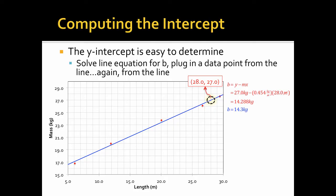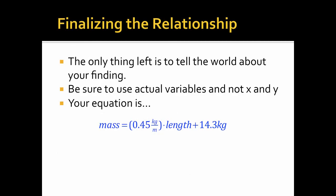So how do I wrap this up? I find the equation of the line. The equation is not going to have y's and x's in it because my data are mass and length. So what this all says is that my mass is equal to the slope times the length of the board plus 14.3 kilograms, not y is equal to 0.45 times length plus 14.3. We use our actual values from our y and our x.